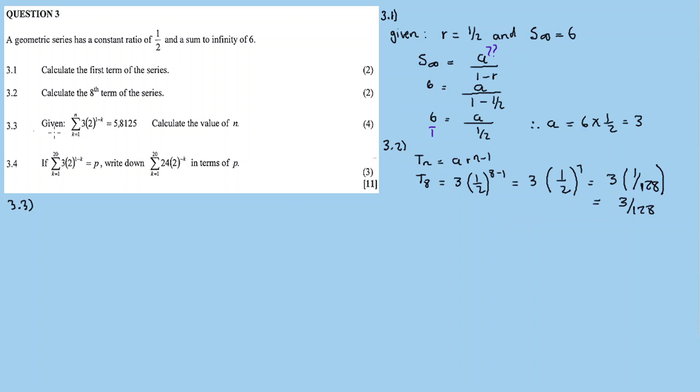3.3. Given this sigma notation, or this sum, which is equal to 5.8125, calculate the value of N for 4 marks. We need to find the N value, the top value for the sum. Obviously, we need to set up an equation. Before we can find that, let us focus on the left-hand side for a moment.